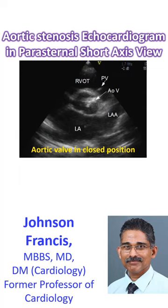Echocardiogram in parasternal short axis view showing aortic stenosis with a thickened aortic valve in closed position. One leaflet of the pulmonary valve in closed position, right ventricular outflow tract, left atrium, and left atrial appendage are other structures seen in this image.